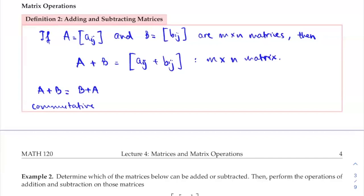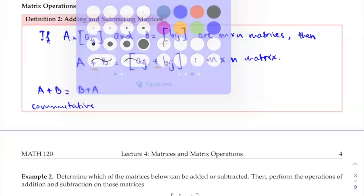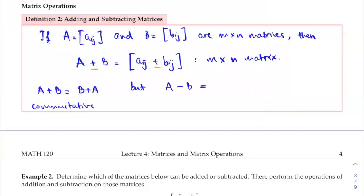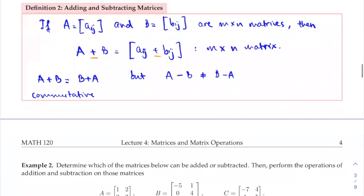However, for matrix subtraction — if you have A minus B, then a-sub-ij minus b-sub-ij gives you the result. For matrix subtraction, you do not have commutativity: A minus B is different from B minus A. So you have to be careful when doing matrix subtractions. A plus B equals B plus A, but A minus B is not the same as B minus A, as you'll see in the following example.